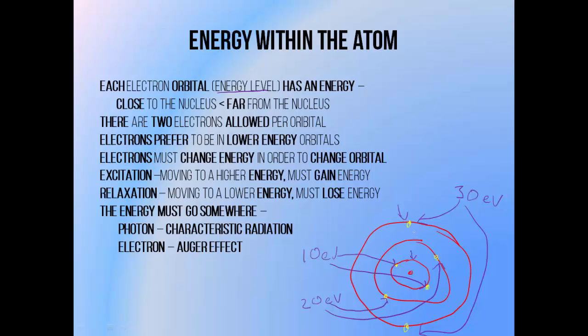And you might have noticed by now that I keep drawing two electrons per orbital. That's because each orbital can only hold two electrons. Once it has two electrons, it's full.